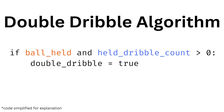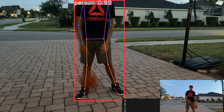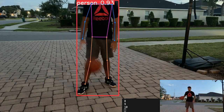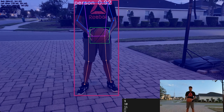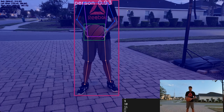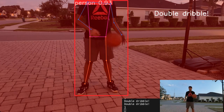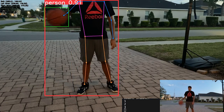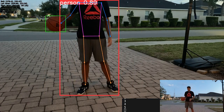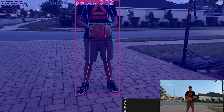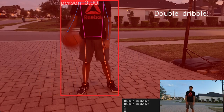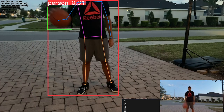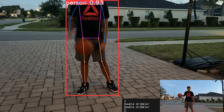As you can see, I'm dribbling the ball, and as soon as I pick it up, it turns blue. If I dribble it again after picking up — if I don't pass it or something — it's going to call a double dribble. It tracks that you have held the ball in your hands and then dribbled it again after that, meaning it's a double dribble. It also works for one hand: if you pick it up with one hand and dribble again, it's a double dribble.